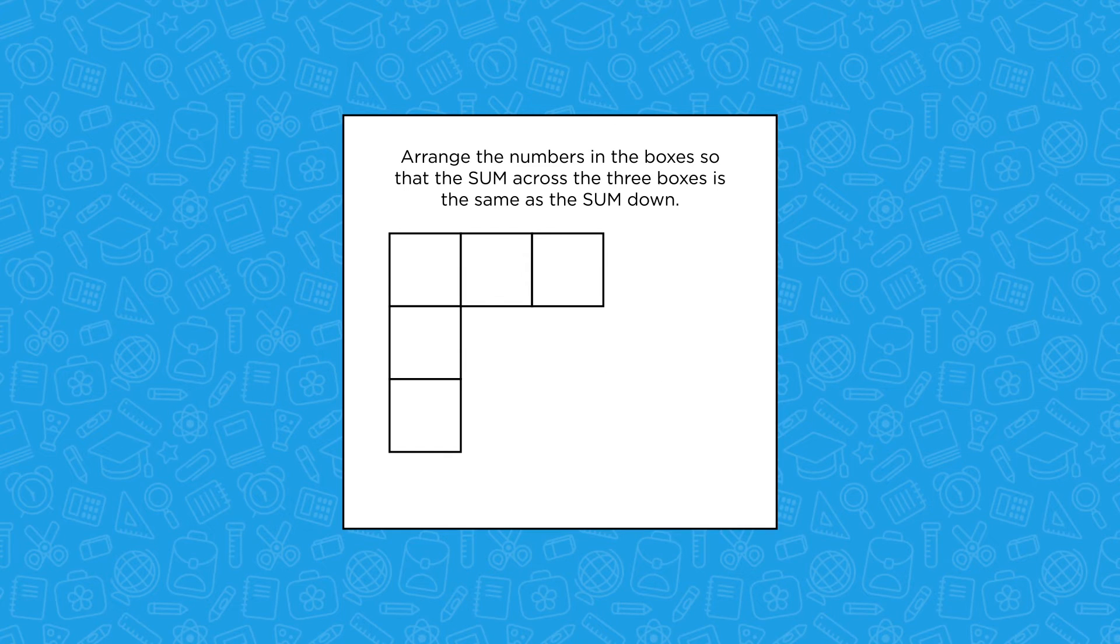Here's one possible solution: putting 1 in the shared square, and then 2 and 5, and 3 and 4 in the other squares, the sum in each direction is 8.